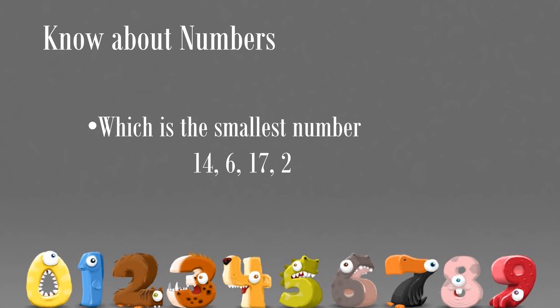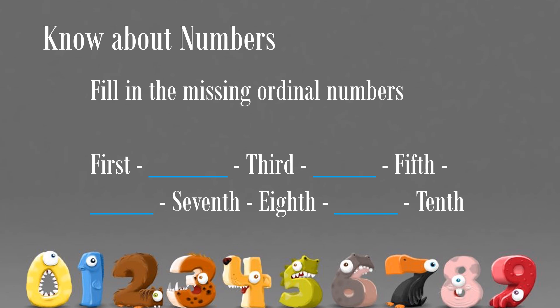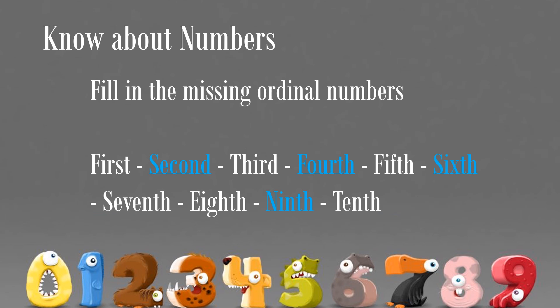Which is the smallest number? Answer is number 2. Fill in the missing ordinal numbers: First, Second, Third, Fourth, Fifth, Sixth, Seventh, Eighth, Ninth, Tenth.